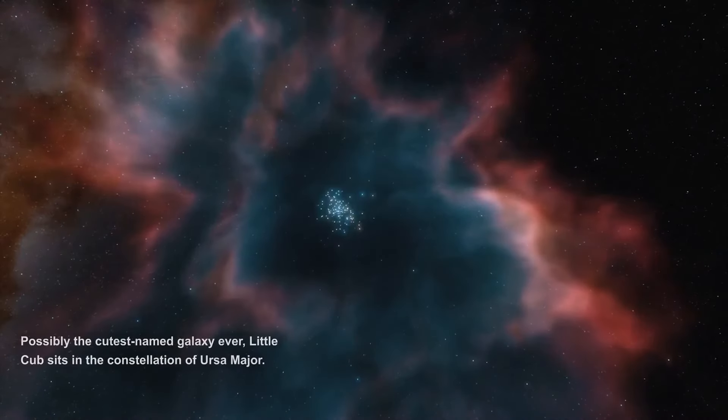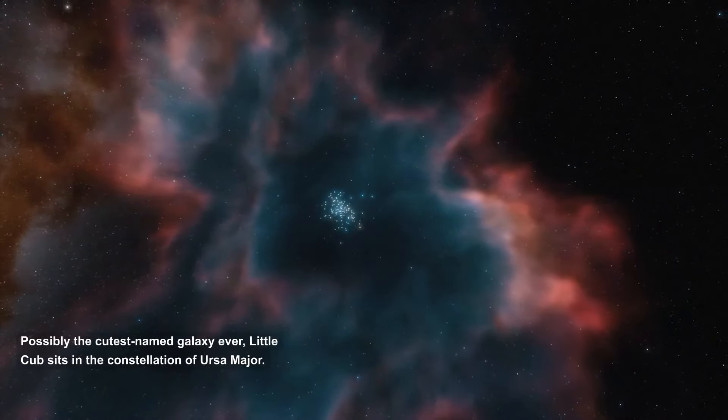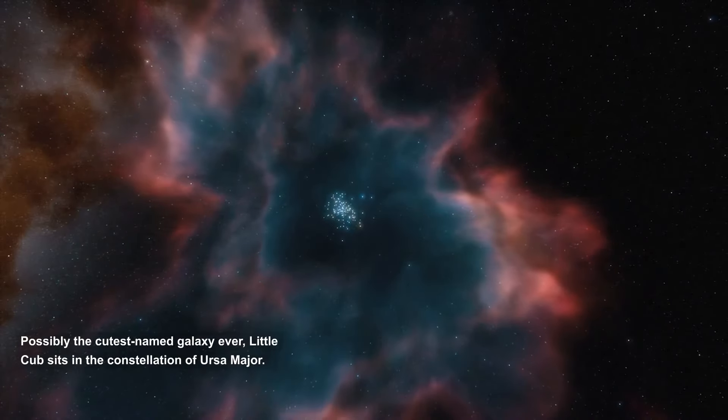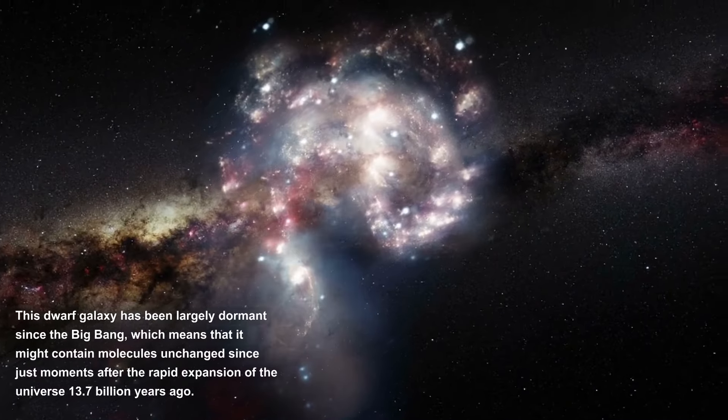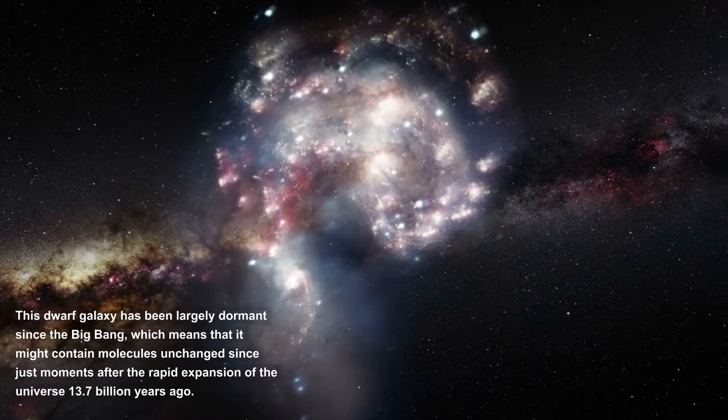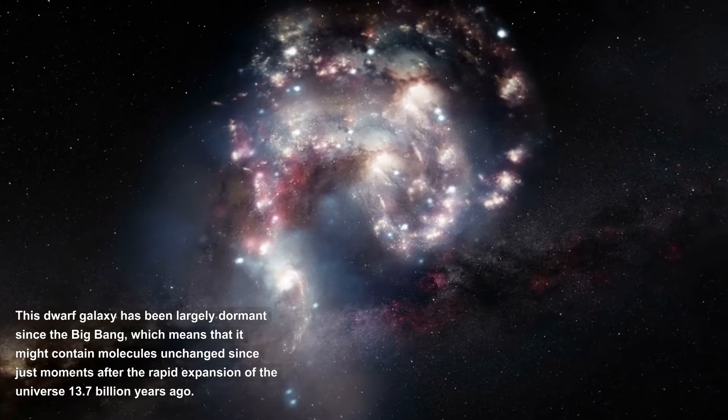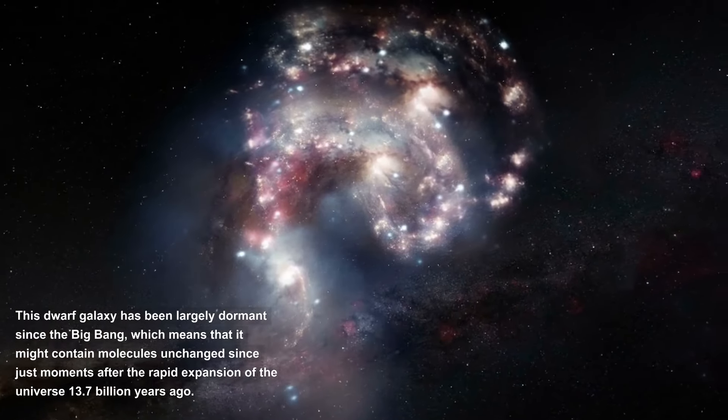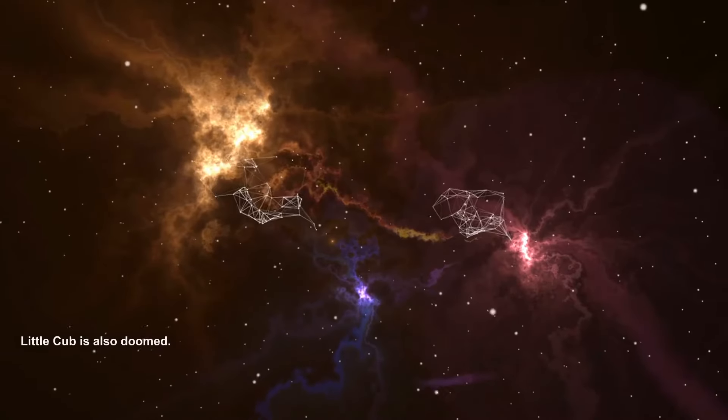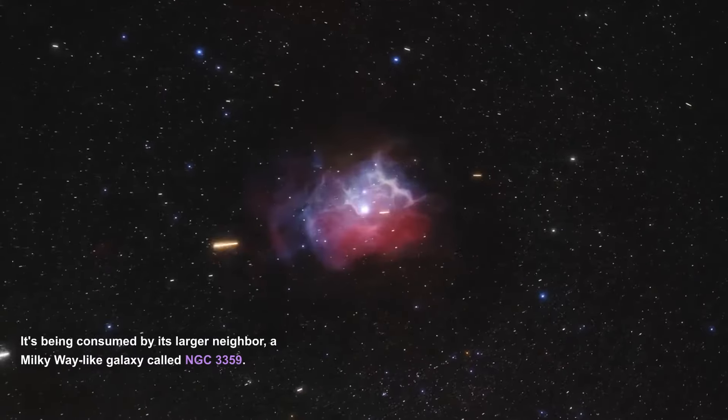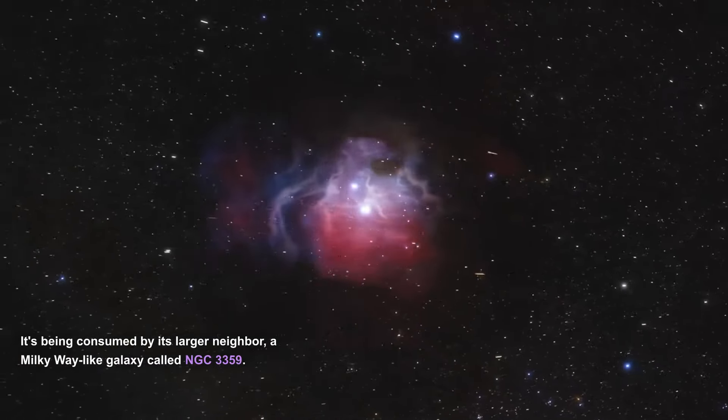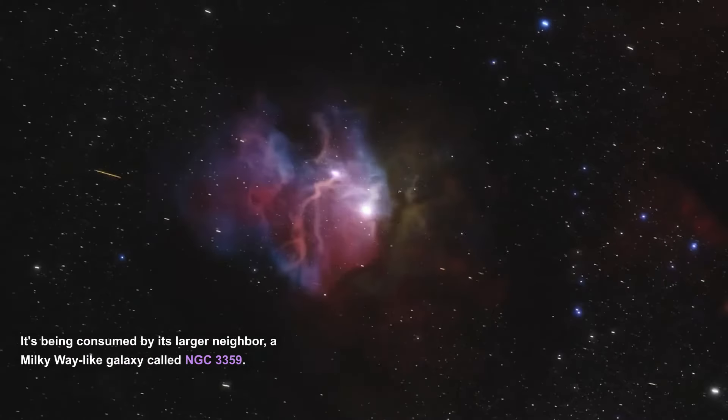Doomed Little Cub. Possibly the cutest named galaxy ever, Little Cub sits in the constellation of Ursa Major. This dwarf galaxy has been largely dormant since the Big Bang, which means that it might contain molecules unchanged since just moments after the rapid expansion of the universe, 13.7 billion years ago. Little Cub is also doomed. It's being consumed by its larger neighbor, a Milky Way-like galaxy called NGC 3359.